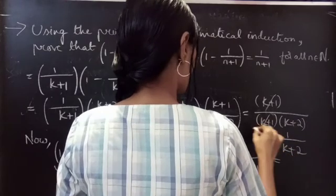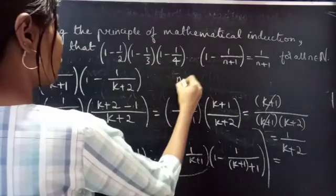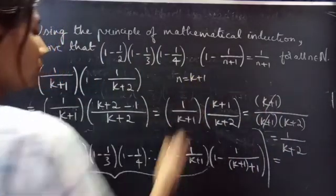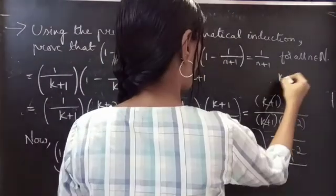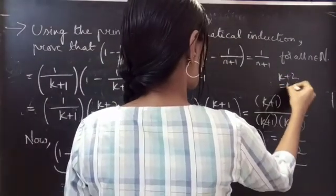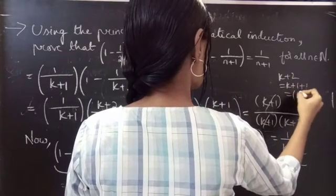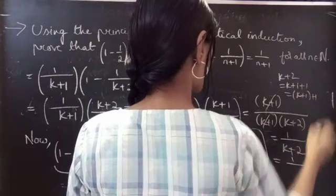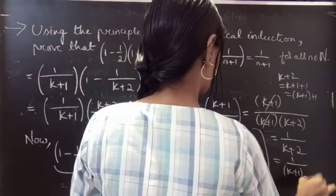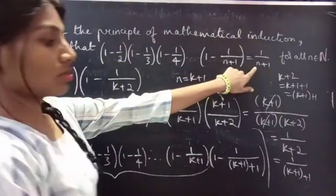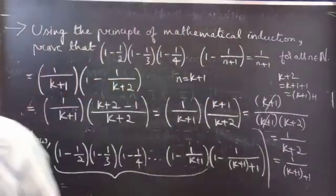We need to write this in terms of k+1. We are proving for n = k+1, so we split the 2 as 1+1, and write k+2 as k+1+1, which is the RHS for n = k+1. Therefore, the given statement is true for n = k+1.